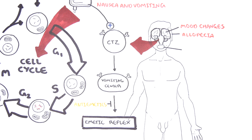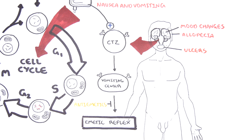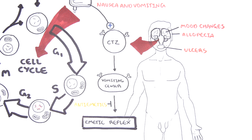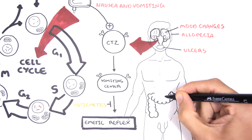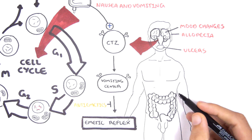Similarly, the lining of the mucosa such as the mouth is also a potential site for side effects. Drugs such as methotrexate can cause ulcers and mucositis. Another important side effect is constipation and diarrhea.